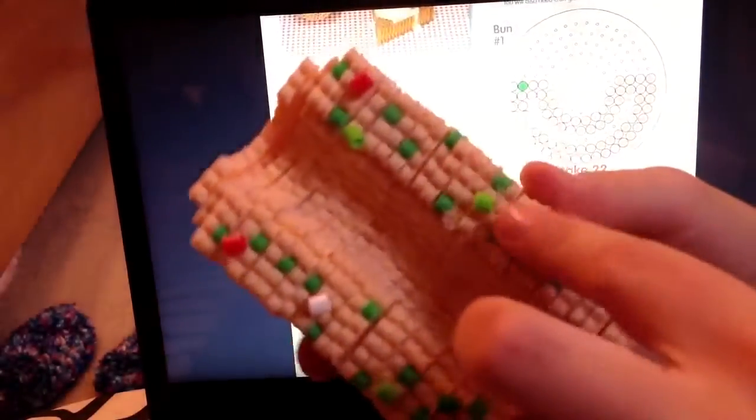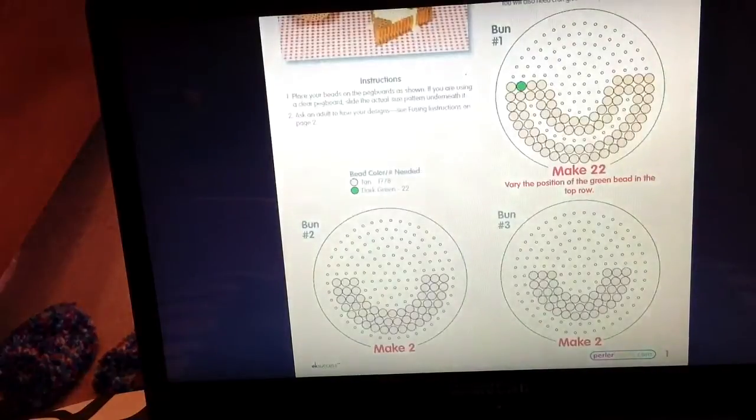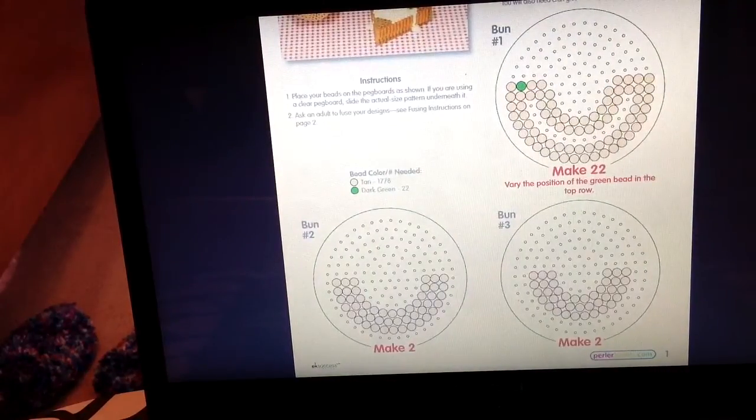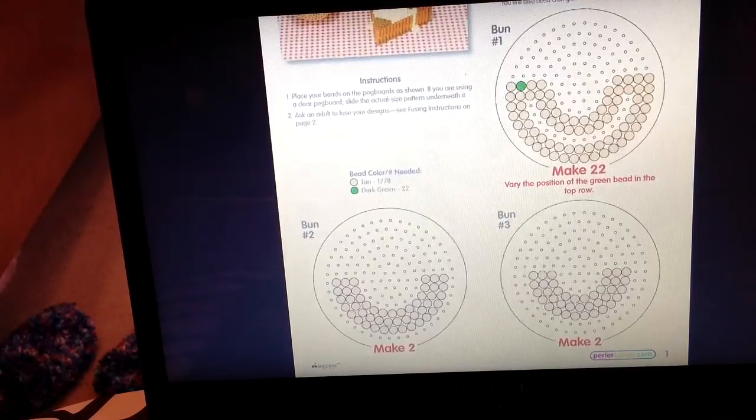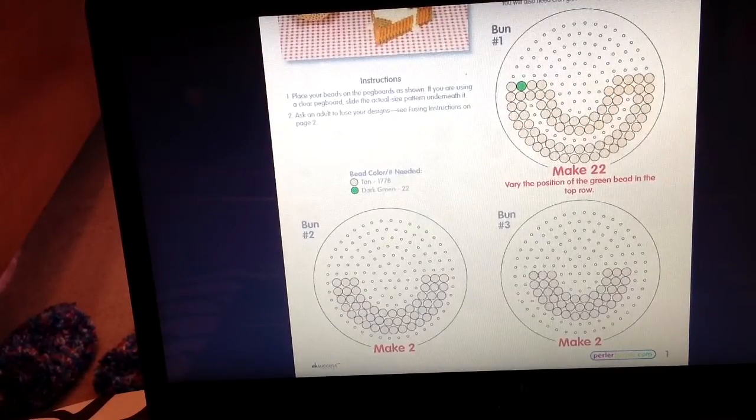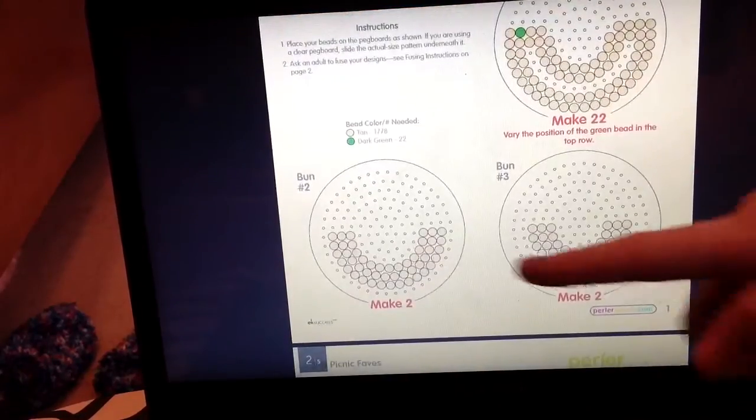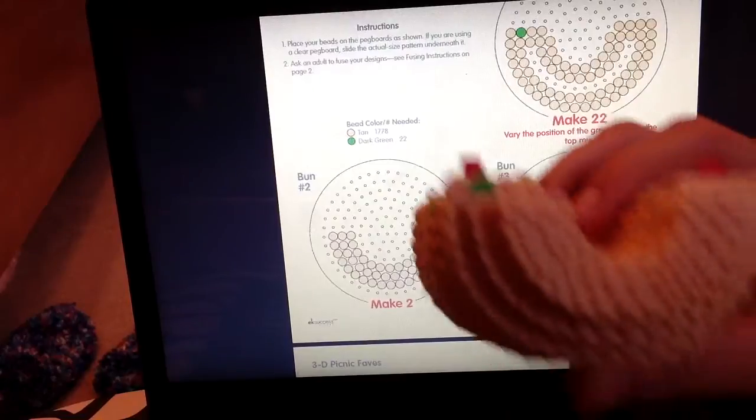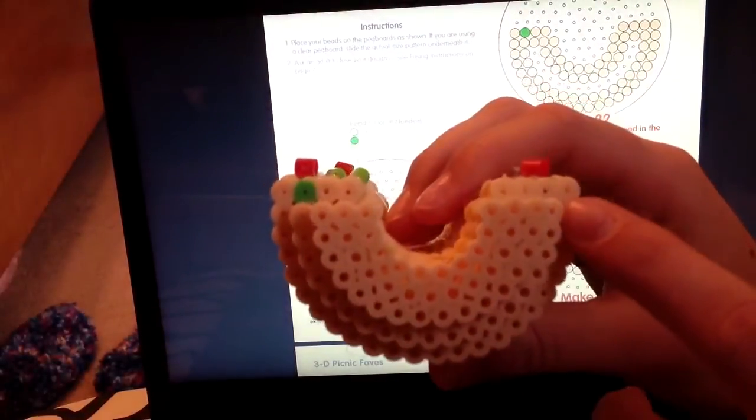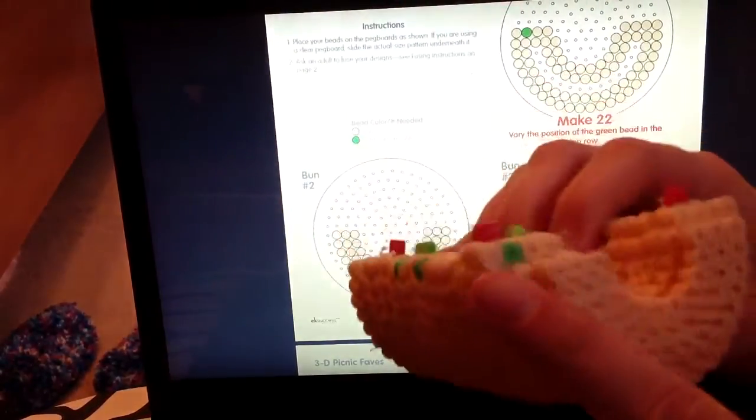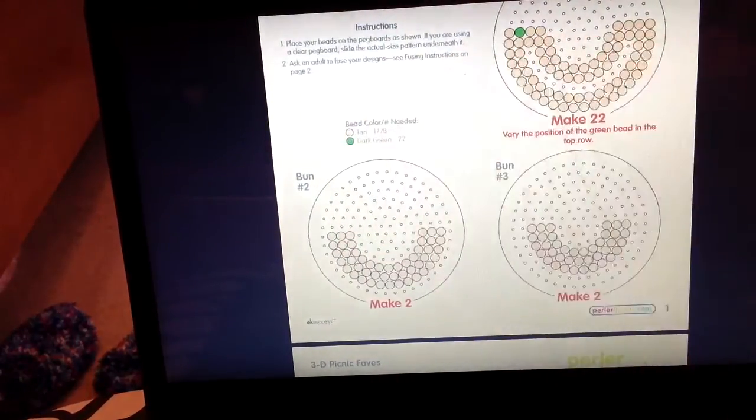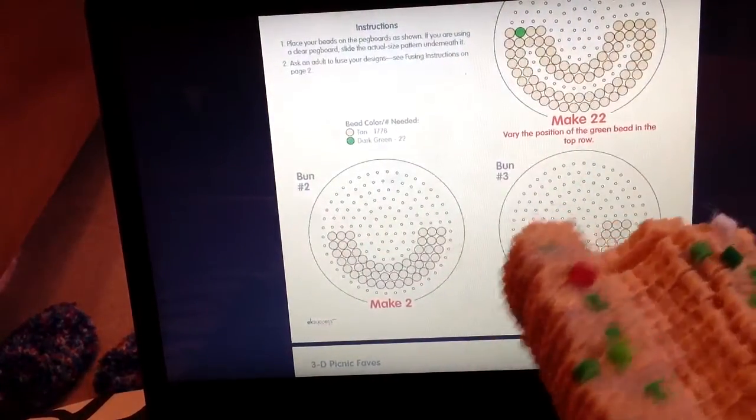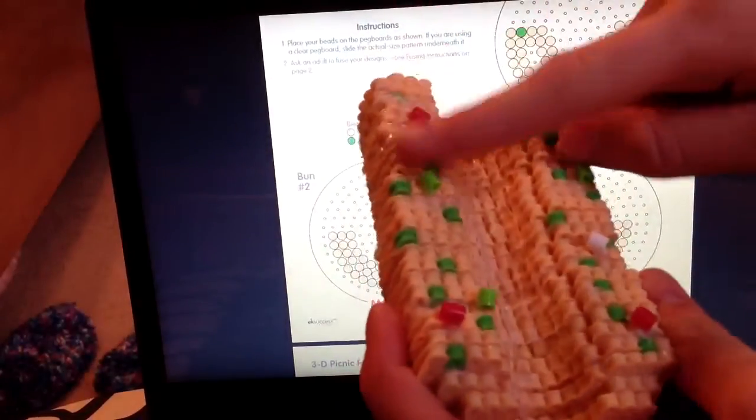And then after you make 22 of those, you need a lot of circles. You're going to want to make two of each of these. And all it is is this one's just a little bit bigger than this one, and then go on the end here. And the bigger piece is right here, you can only see the outside, and then the little piece is right here, and it gives it more of a bun effect.